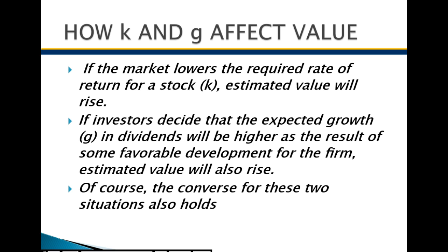Looking at G: if an investor decides the expected growth in dividends will be higher due to favorable developments, the estimated value of the company will rise, because G is subtracted from K, which makes the effect of K smaller. If a company like Microsoft at $30 said they'd pay a $5 dividend every year for the next 10 years, that stock becomes a lot more valuable — you'd only have to hold it six years to get your $30 back. Conversely, if K increases and G decreases, the stock price goes down.